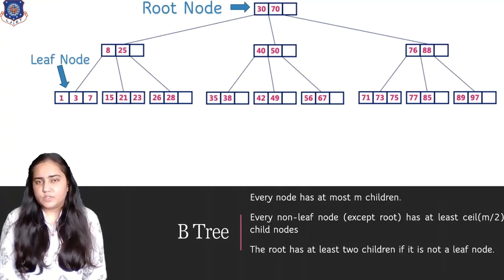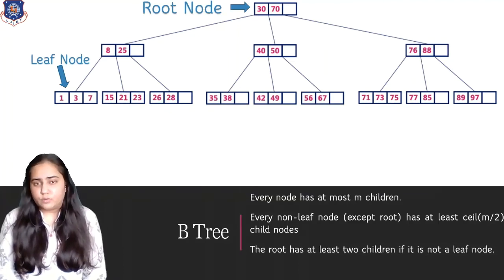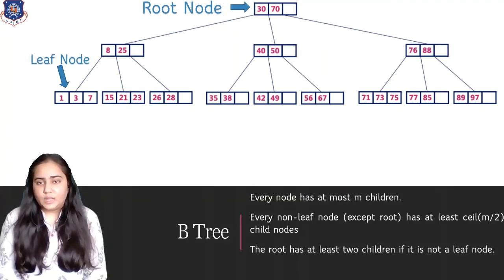And the root must have at least two children if it is not a leaf node. If you've just begun creating your tree, then you will have only one node in your tree. And that node would be the leaf node and the root node both. So in that case, this rule does not apply. But if you have more than one node in your tree, then the root node must have at least two children.